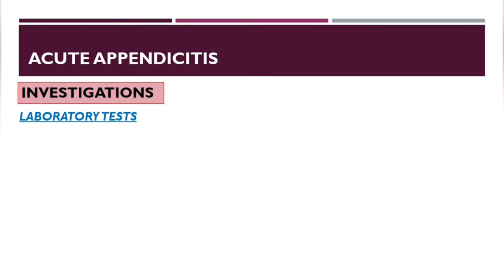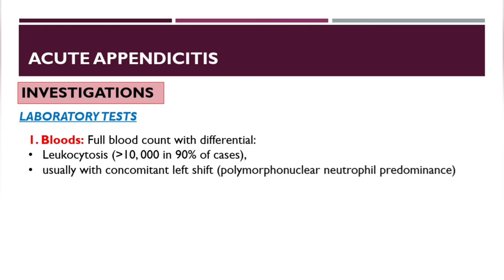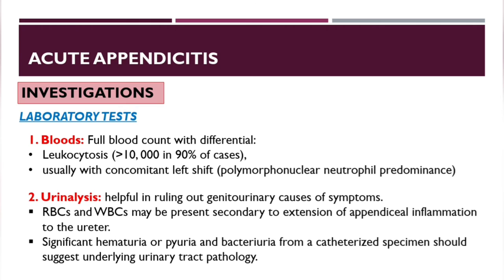Important investigations: laboratory tests include CBC — leukocytosis, usually with a concomitant left shift where polymorphonuclear neutrophils predominate. Urinalysis is helpful in ruling out genitourinary causes; red blood cells and WBCs may be present secondary to extension of appendicitis inflammation to the ureter. Significant hematuria, pyuria, and bacteriuria from a catheterized specimen should suggest underlying urinary tract pathology, not appendicitis.